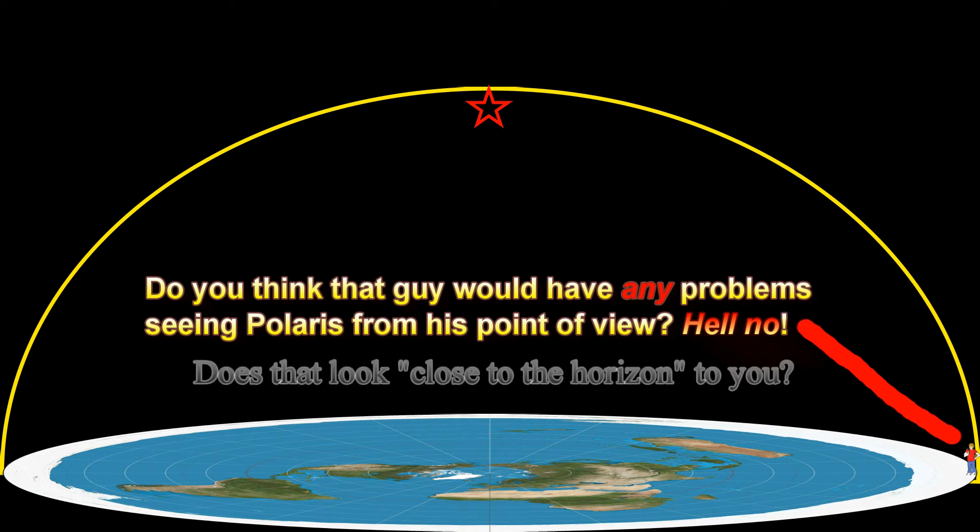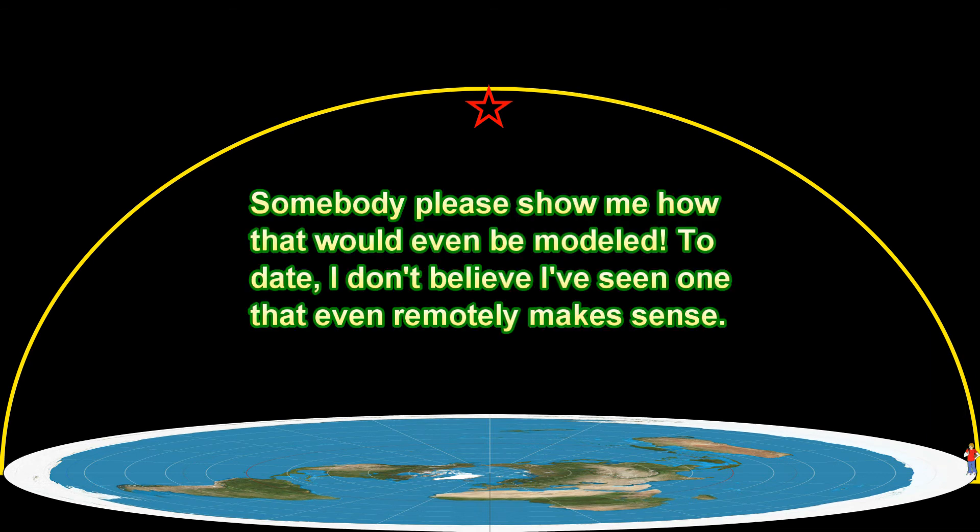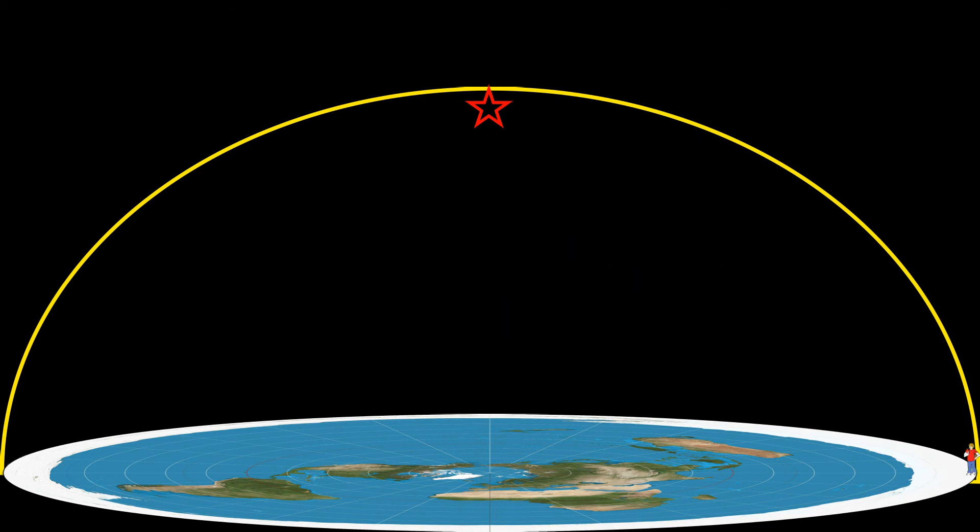Not only can they not see Polaris from there, but the stars that they do see are completely different stars, and they turn in the opposite direction. I mean, you've got to be a complete idiot to believe this stuff. I mean, what sort of reality do you guys live in?